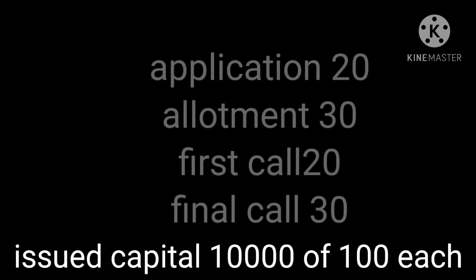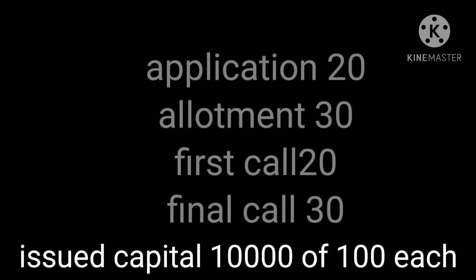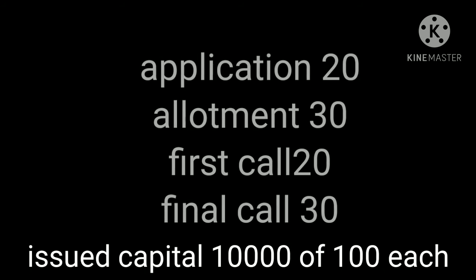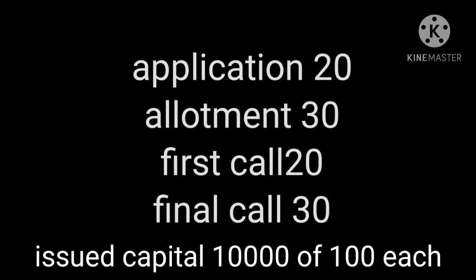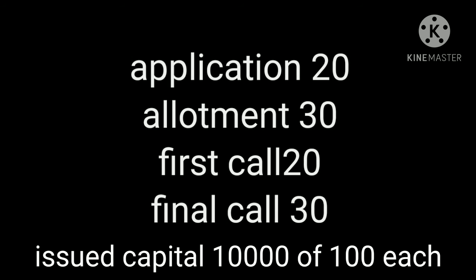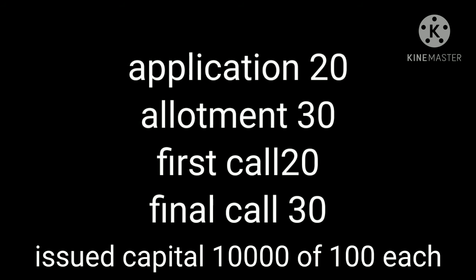Application money is rupees 20, allotment is 30, first call is 20, and final call is 30. All 10,000 shares were subscribed by the public and amounts duly received. The nominal value of one share is 100, and shares are issued at a price equal to the nominal value.